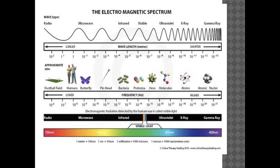The electromagnetic spectrum shows us all the different types of waves, everywhere from radio waves to gamma rays. Radio waves on this end of the spectrum have very long wavelengths and therefore a very low frequency. As we travel down through the spectrum, we see visible light in the middle — our rainbow, or ROYGBIV. All the way down to gamma rays, which are highest in energy because of their short wavelength and high frequency.